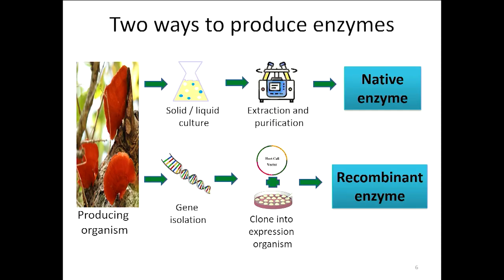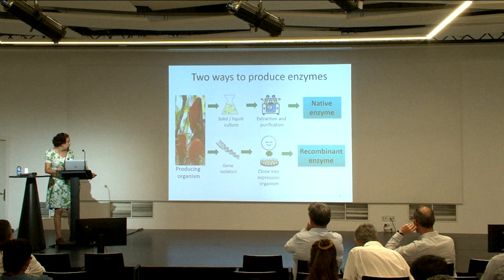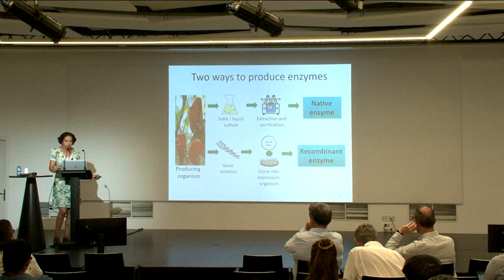When we are going to use an enzyme for biotechnology, we have two ways to produce it. One is to grow the producing organism in solid or liquid culture and from this culture extract and purify the enzyme of interest. These enzymes are called native enzymes. Another way is to take the DNA or RNA from the producing organism, isolate the gene that codifies for the enzyme we are interested in, and clone it into an expression organism. The enzymes produced in this way are called recombinant enzymes.